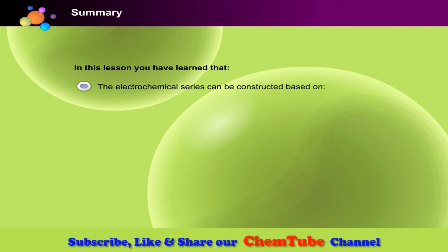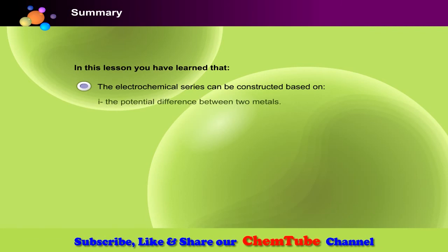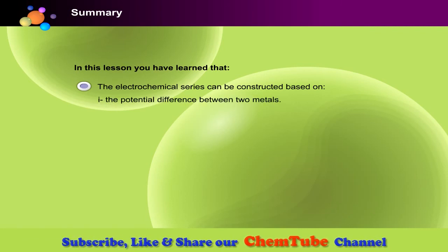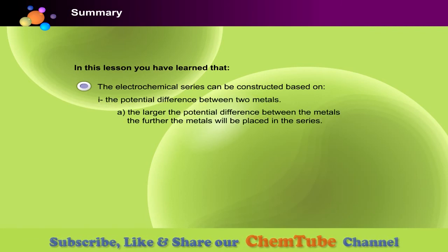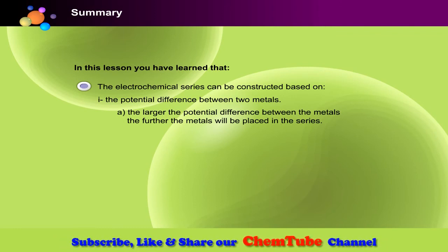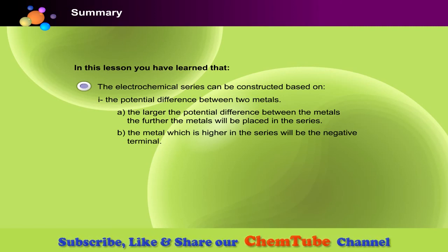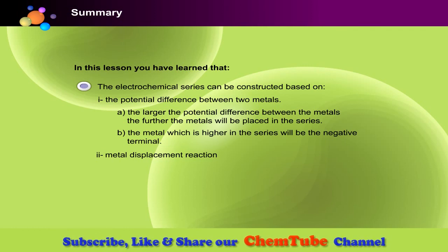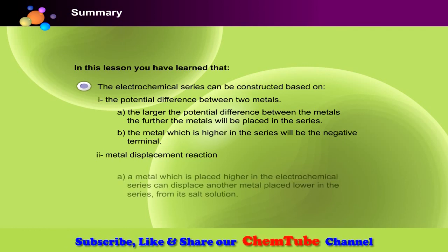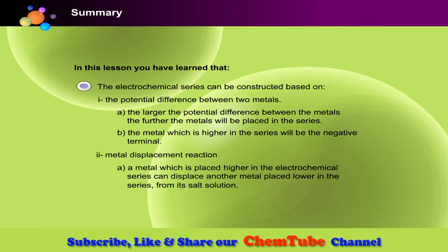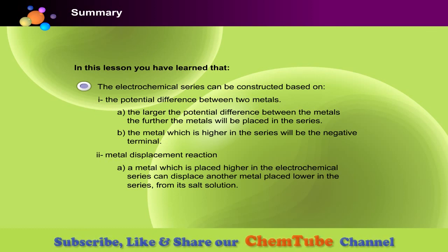The potential difference between two metals: the larger the potential difference between the metals, the further the metals will be placed in the series. The metal which is higher in the series will be the negative terminal. Metal displacement reaction: a metal which is placed higher in the electrochemical series can displace another metal placed lower in the series from its salt solution.